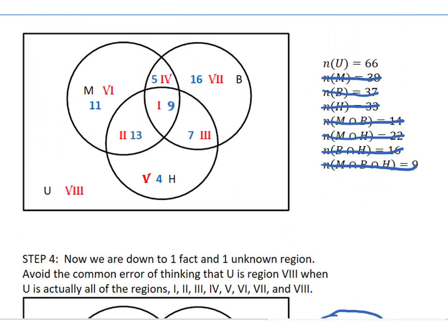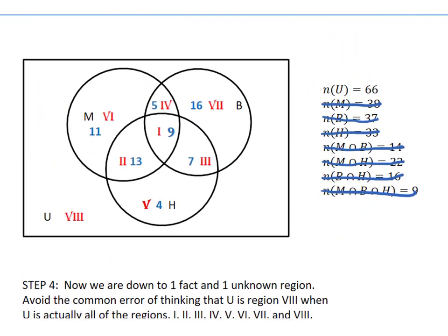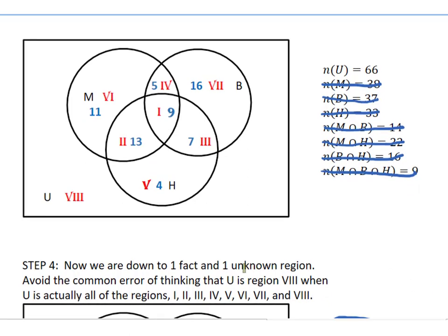So we are down to one fact and one unknown region. And I just want you to remember to avoid the common error of thinking that U is a region, region 8. People often think these are the same thing. When in fact region 8 is everything outside the circles, U includes all of the regions. U is actually all of regions 1, 2, 3, 4, 5, 6, 7, and 8. So when we say there are 66, you can't just write a 66 out here. That 66 includes all of these other values that we've already labeled.